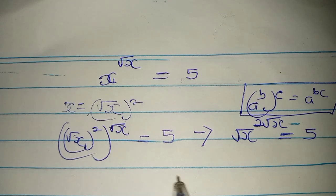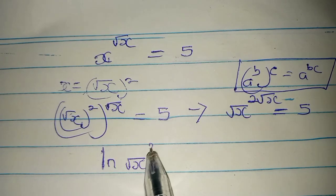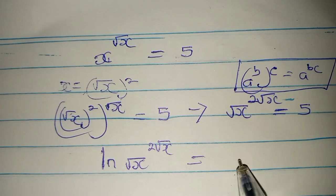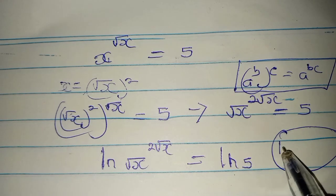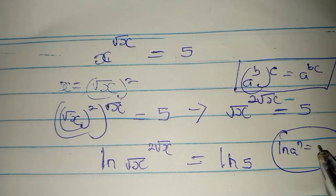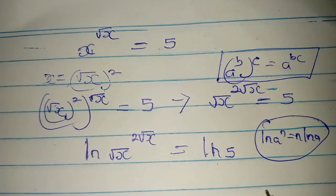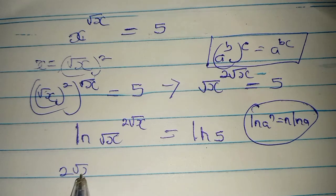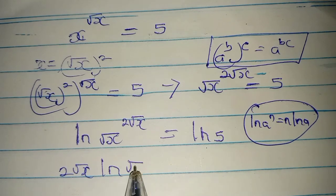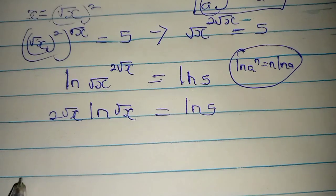Now take the natural log of both sides. Therefore we have the natural log of √x^√x equals the natural log of 5. And using the property, we have the natural log of A to the power of N equals N natural log of A. So we have the natural log of √x equals the natural log of 5 divided by 2.